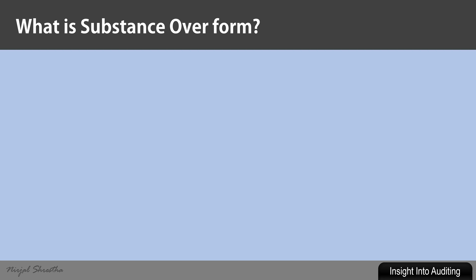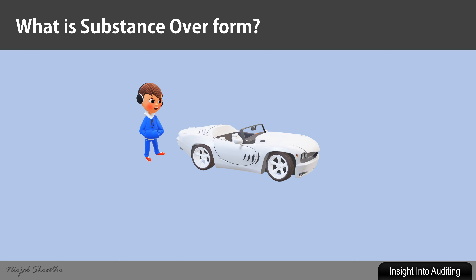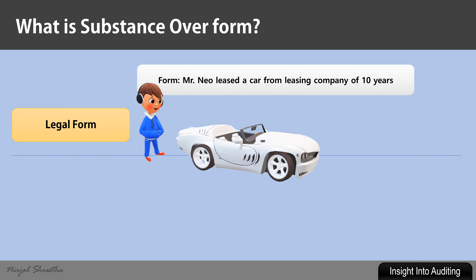Let's take an example to clarify the concept. This is Mr. Neo — he will help us understand this concept. Neo leased a car from a leasing company for 10 years on a monthly rental of 1000. If we only consider the legal form of the financial transaction, it is a car leased to Neo in consideration of rental payment, and the ownership lies with the leasing company. Neo can use the car for his purpose, but he is not the owner of the car.